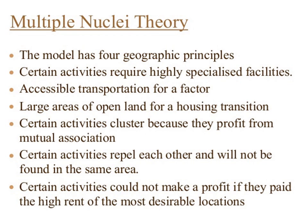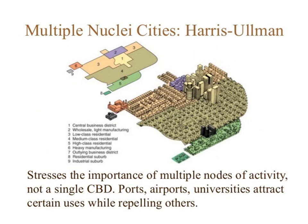This slide refers to multiple nuclei cities put forth by Harris and Ullmann, in which the central business district, wholesale light manufacturing, low-class residential, medium-class residential, high-class residential, heavy manufacturing, outlying business district, residential suburb and industrial suburb were proposed. This theory stresses the importance of multiple nodes of activity — not a single CBD. Ports, airports and universities attract certain users while repelling others.